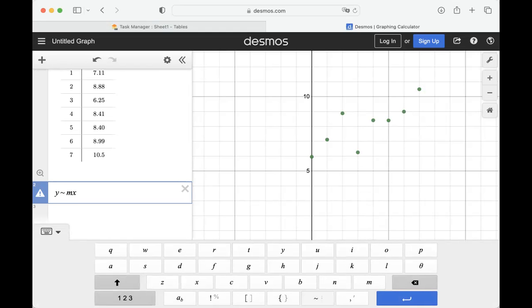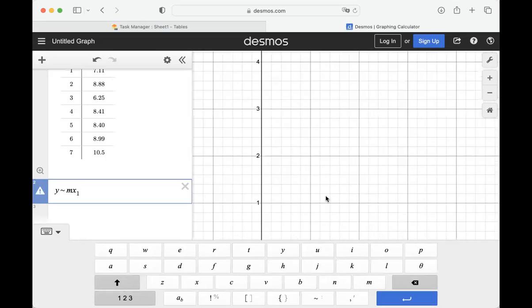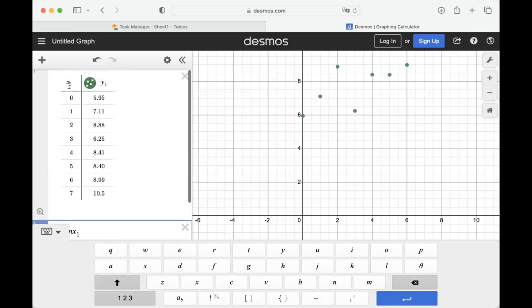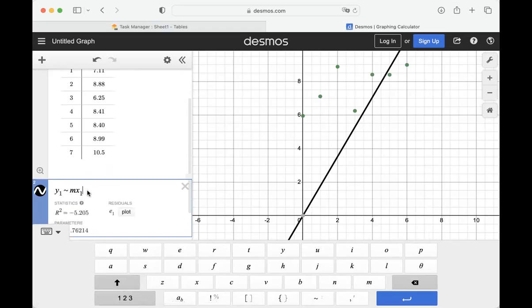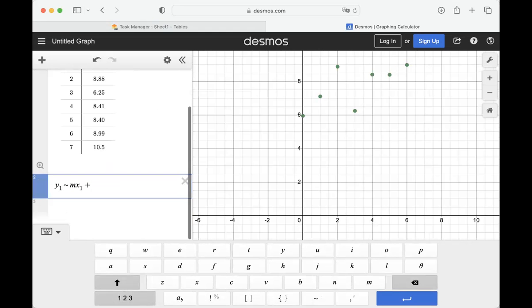But I forgot you have to do the X1 and Y1 in the columns. So this is Y1 squiggly MX1 plus B.